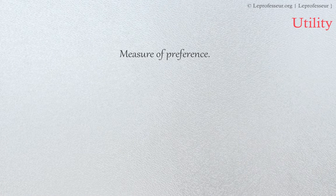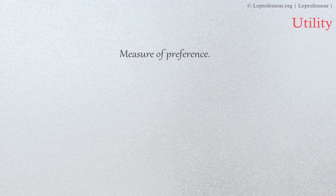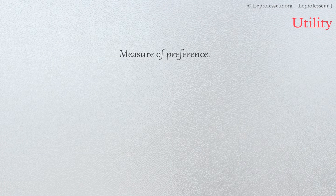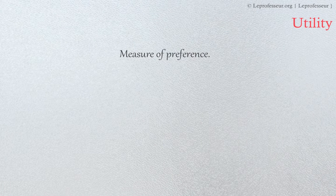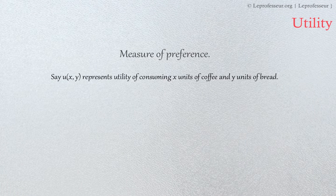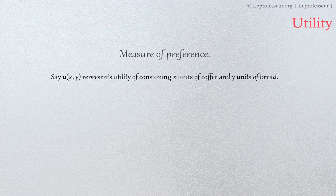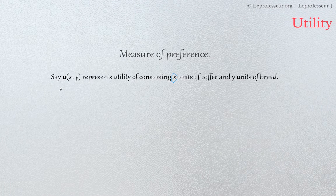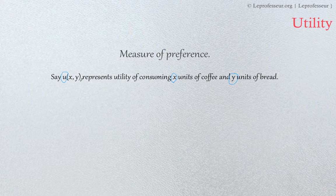Whether you give preference to the banana or to the strawberries — utility is simply the measure of preference. It can be tricky because you may not be happy with either option, so the utility would be very low or maybe zero if neither strawberries nor banana make you happy. Let's see how we can model utility and consumer choices. We define some function U(x, y) which represents the utility of consuming x units of coffee and y units of bread.